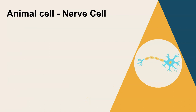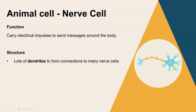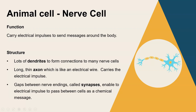The last animal cell is the nerve cell. The function of nerve cells or neurons is to carry electrical impulses around the body very quickly so that you can respond to your surroundings. The structures include lots of dendrites - the branching parts coming off the nerve cell - so that connections can be made with lots of other nerve cells and the impulse can be passed around the body rapidly. The axon is the long thin wire section, a bit like an electrical wire, which carries the electrical impulse. There are gaps between the endings of nerve cells called synapses, where the message is sent as a chemical impulse.